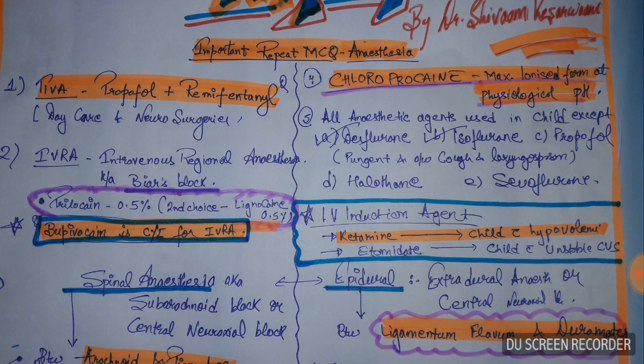Among desflurane, isoflurane, propofol, halothane, and sevoflurane — desflurane and isoflurane are not used in children because they are pungent and associated with cough and laryngospasm. The IV induction agent of choice in a child with hypovolemia is ketamine.